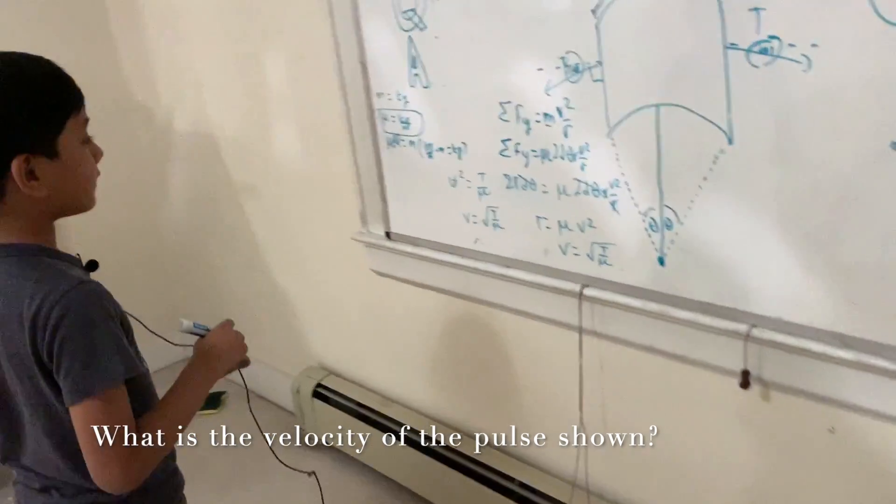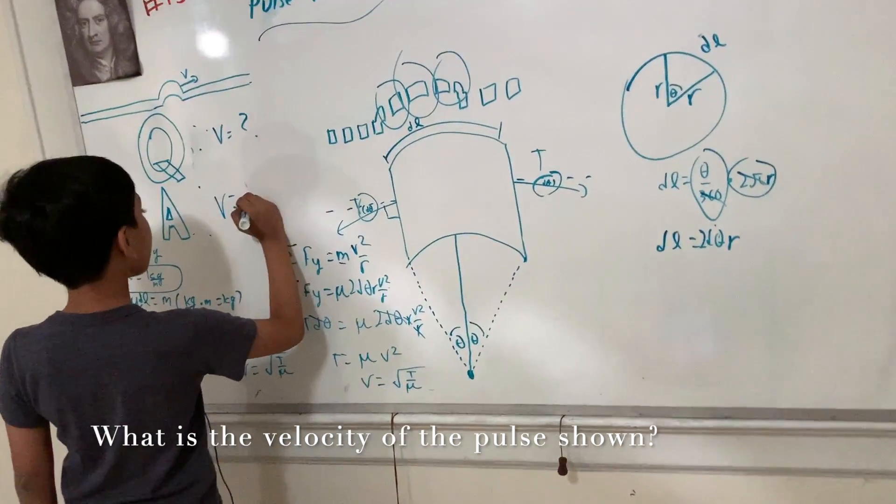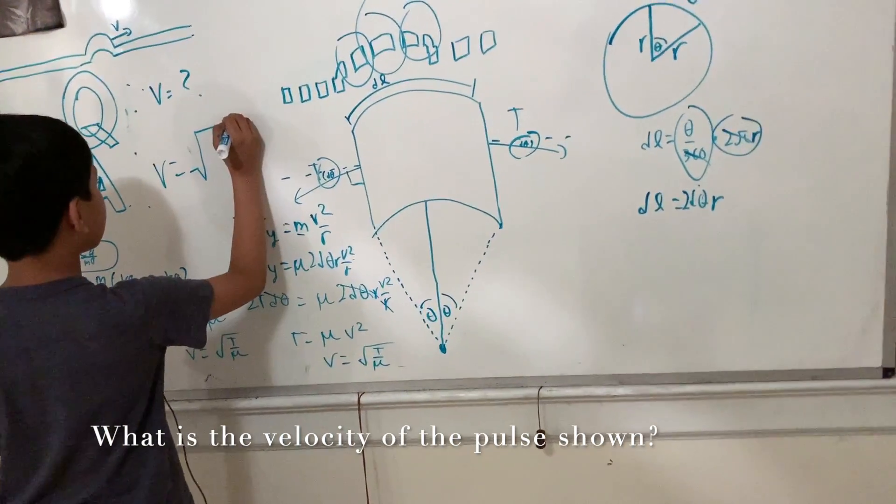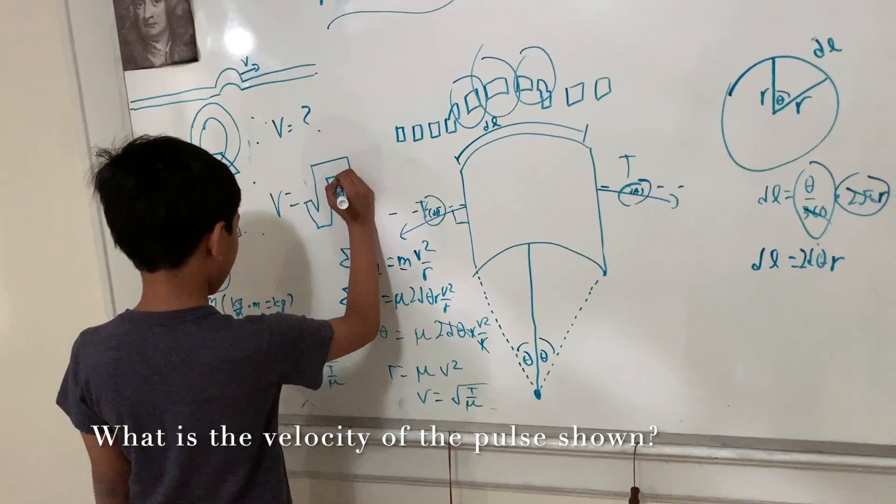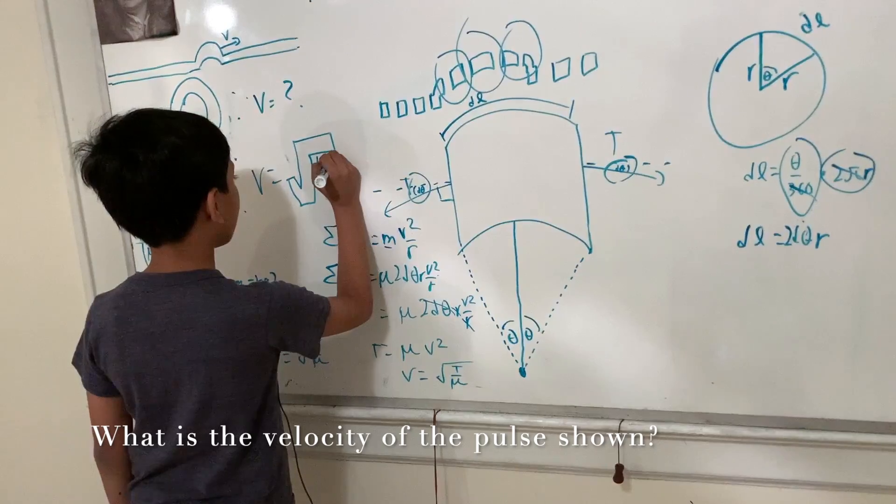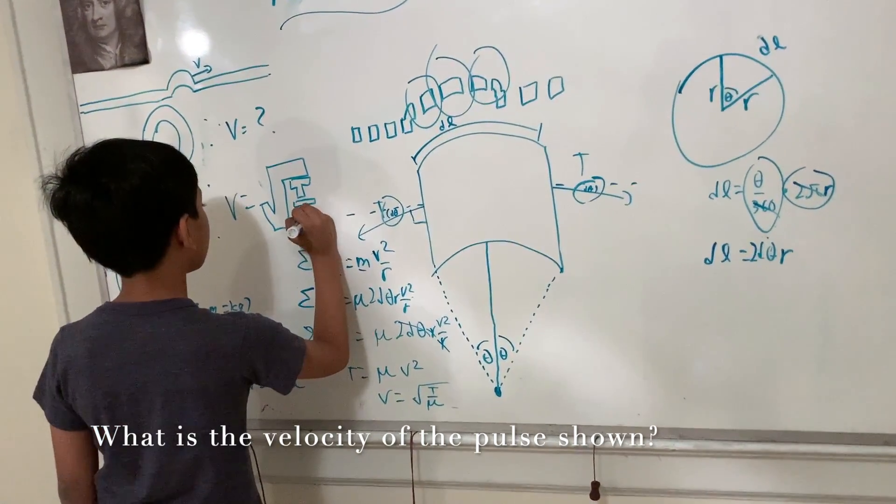Okay, so that's our new answer for our pivotal question. V is the square root of T divided by mu. V is the square root of T over mu.